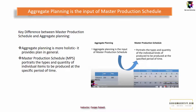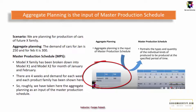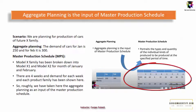Let us understand this with an example. Here we are planning for the production of cars of the Future X family. The demand for the first month is 250 cars and for the second month it is 300. This serves as aggregate planning and is an input for the master production schedule, where the model X family is broken down into model X1 and model X2 for January and February, with demand for each week and each product family shown.